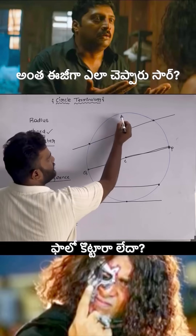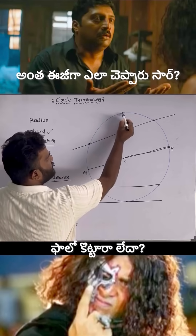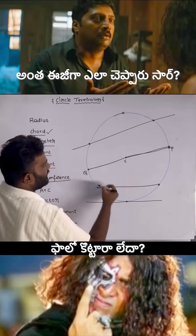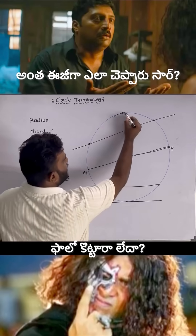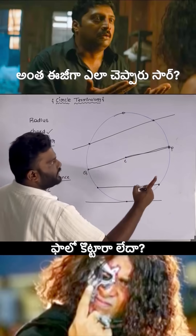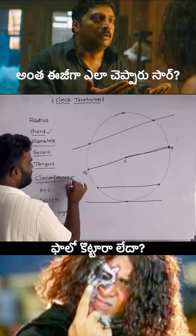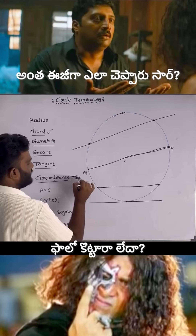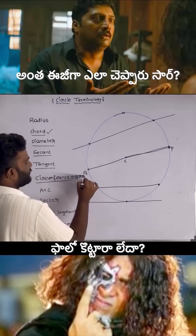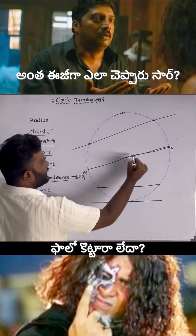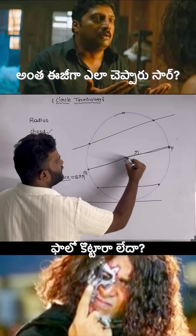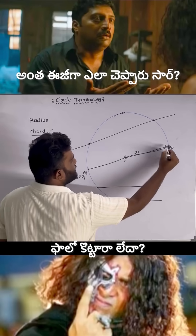Circumference: the total distance traveled in one complete round of the circle is the circumference. The formula to calculate it is 2πr, where r is the radius — the distance from the center to any point on the circle.